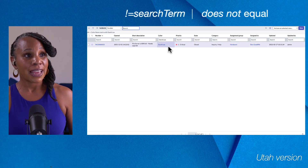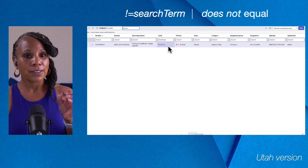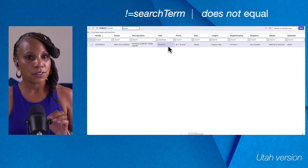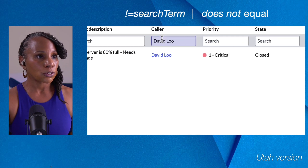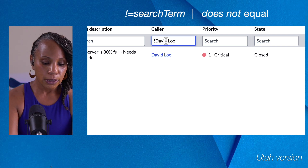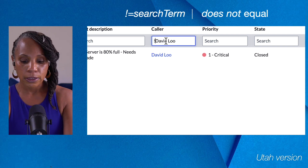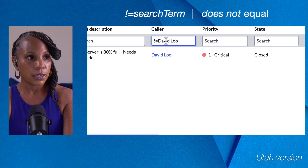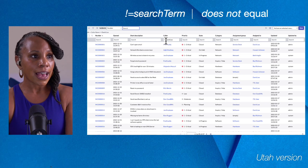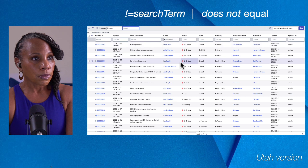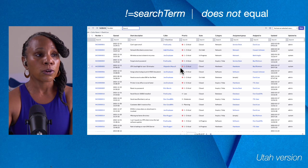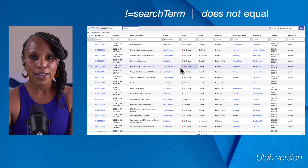Where the equal sign does come in handy is when you want to find a subset that does not contain a particular word or phrase. We'll go back to the Caller field and put in bang, equal sign — 'does not equal' — David Liu, then hit Enter. Our subset of data now shows all records whose caller is not David Liu.